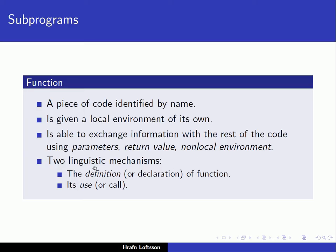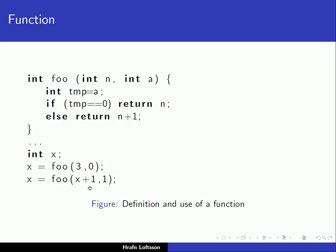There are two linguistic mechanisms associated with functions: the definition (also called a declaration) and its use. In this simple example, we have a definition at the top — int foo — with some parameters and a local variable called temp. The return type is specified first as an integer, and there is a return statement using the keyword return. When we use the function, we give the name, open a parenthesis, enumerate the parameters, and close. We distinguish between the definition of the function and its use.